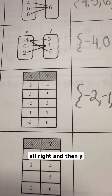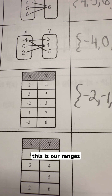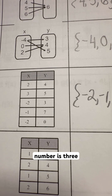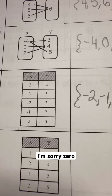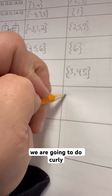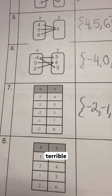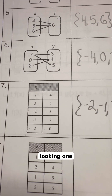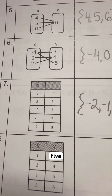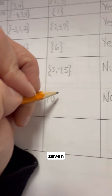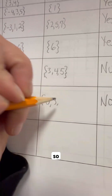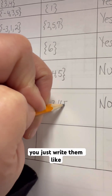And then the y values — this is our range. Our lowest number is 0. So we do curly bracket, 0, then 3, 4, 5, and 7. So you just write them like that, and that's how you do your range values.